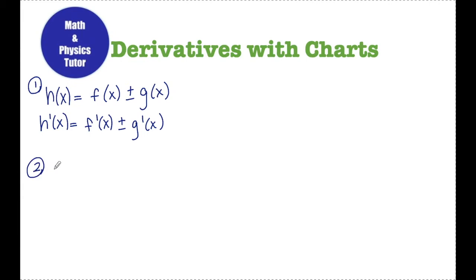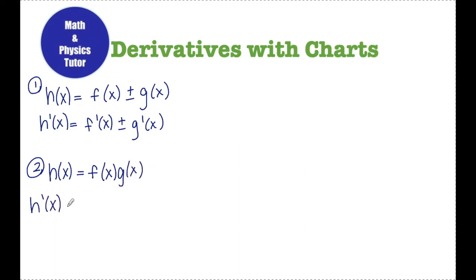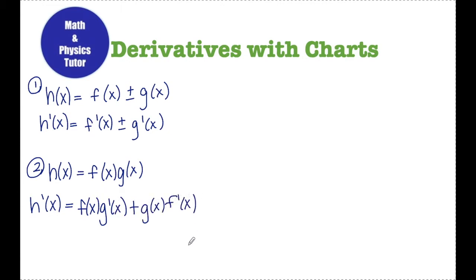The next thing we're going to need to remember is how to take the derivative of a product of functions. Say h of x is equal to f times g. In that case, h prime is going to be found using the product rule. That says first times the derivative of the second, so f times g prime, plus the second times the derivative of the first, so g times f prime.